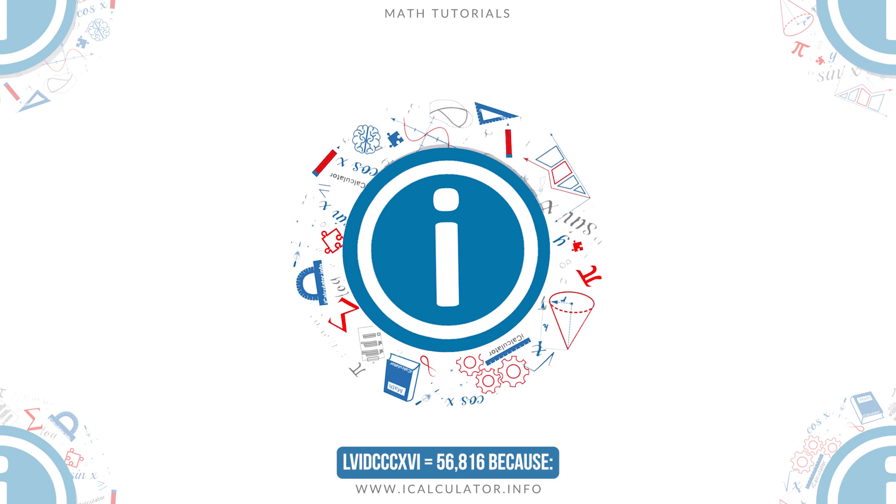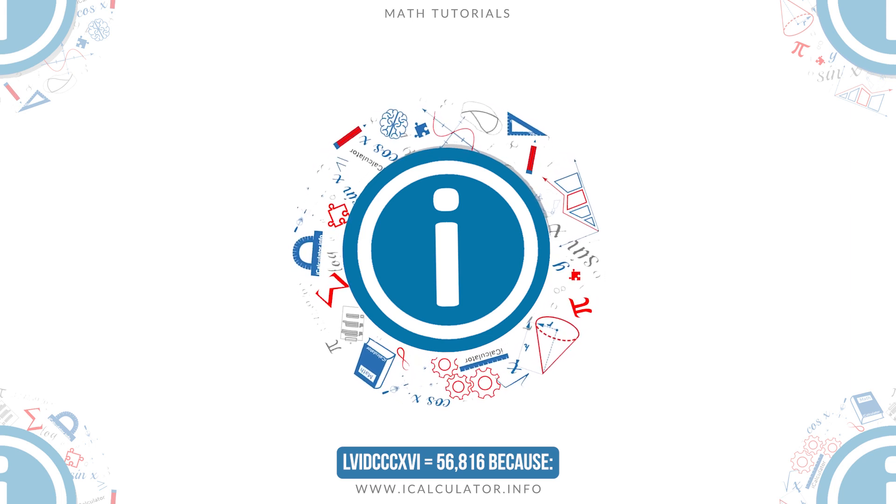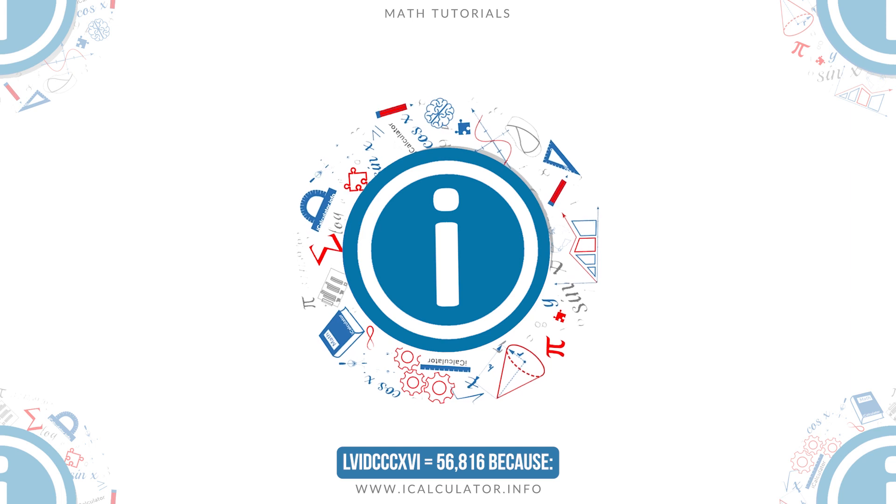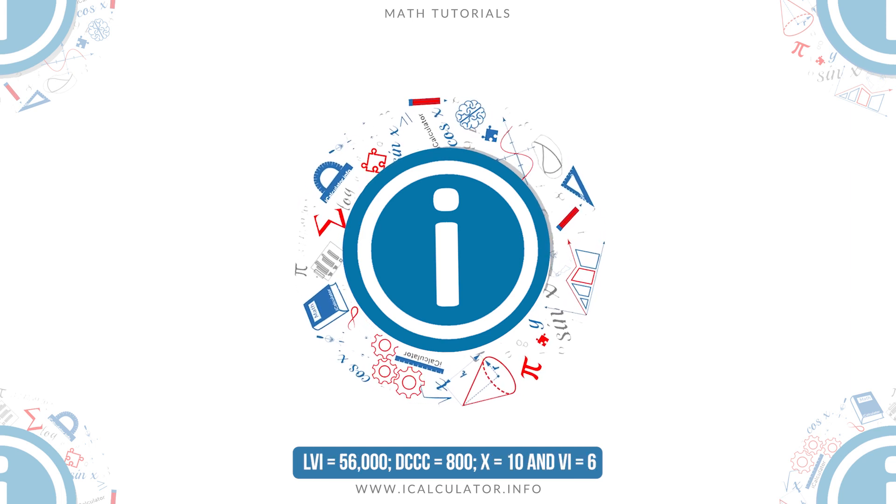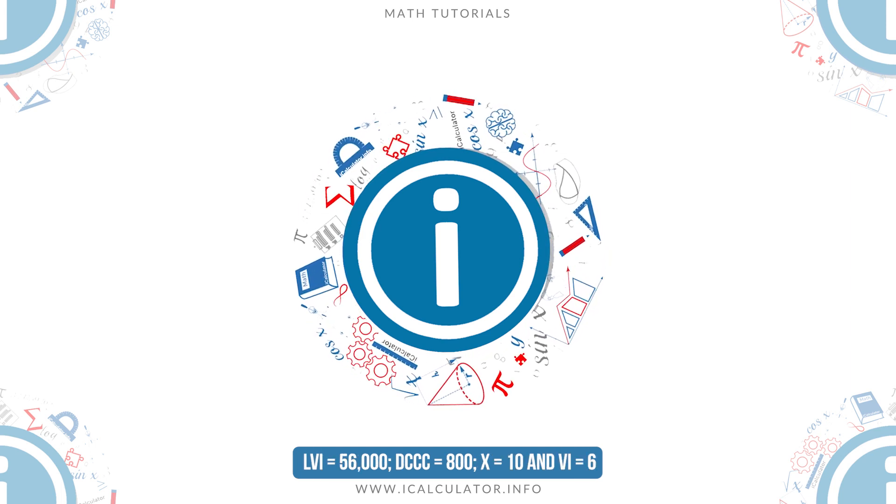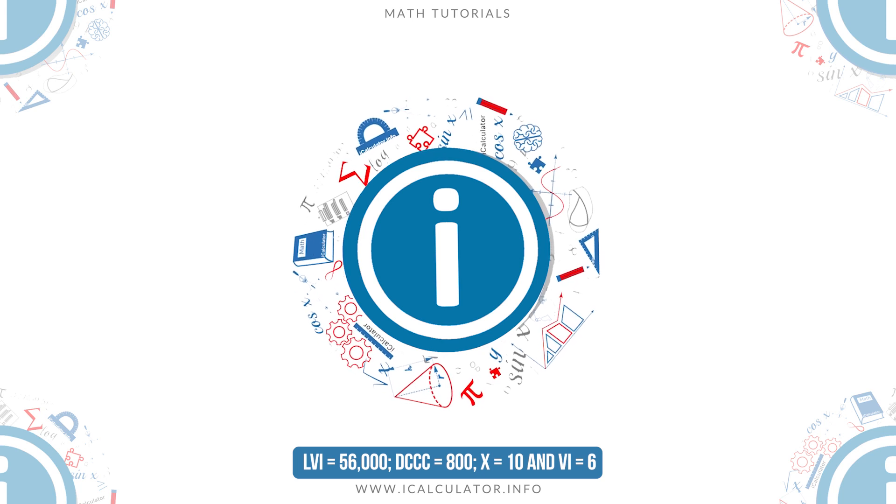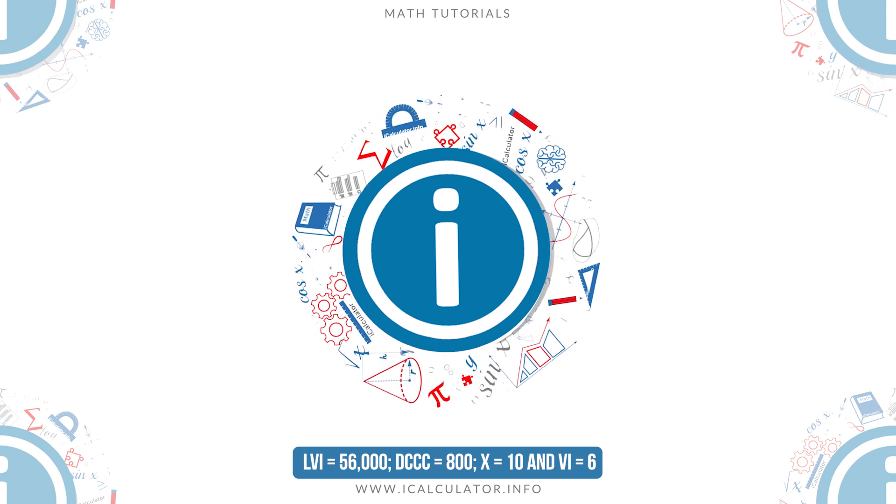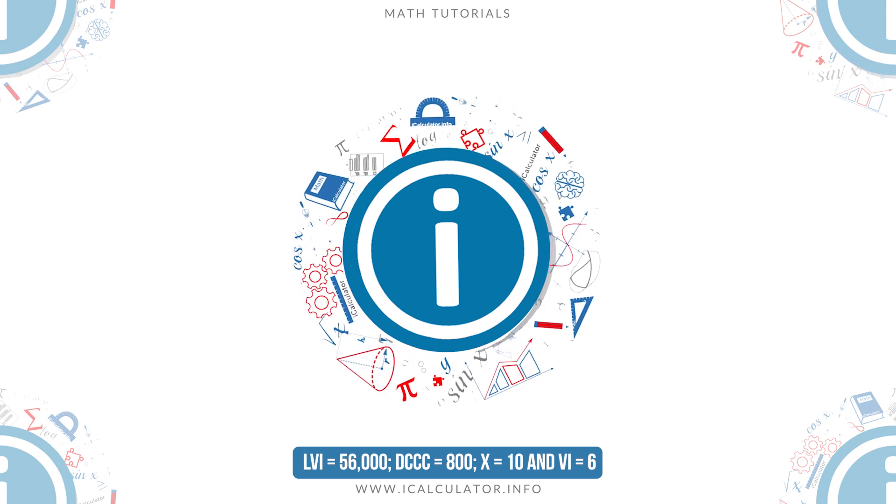For the fourth number we have LVIDCCCXVI equals 56,816, because LVI equals 56,000, DCCC equals 800, X equals 10, and VI equals 6.